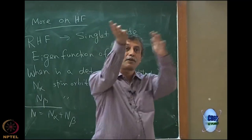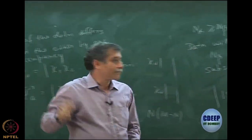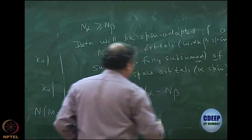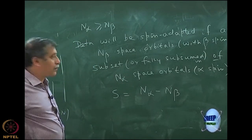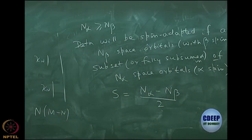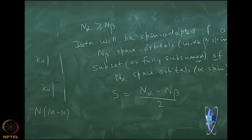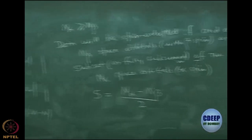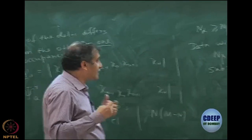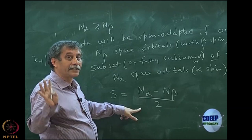In addition, n-alpha will have more orbitals since n-alpha is greater than or equal to n-beta. In this case the determinant will be spin-adapted, and the value of S will be (n-alpha minus n-beta) divided by 2. So I can look at any determinant, examine the space and spin parts, which are alpha and which are beta, and comment whether it is spin-adapted.